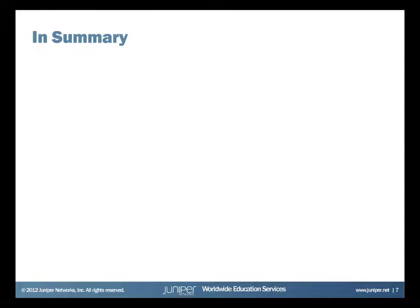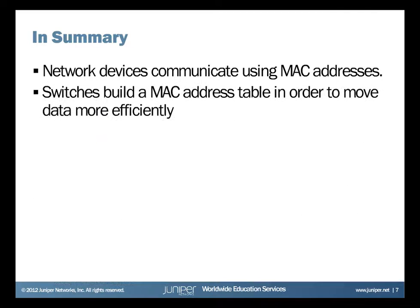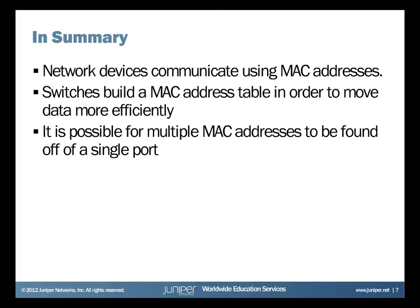So this brings us to the end of this Learning Byte. But before we go, let's have a quick recap of what we've discussed. We talked about when network devices communicate with each other, they use the MAC address to determine where the frame should go. Switches build a MAC address table in their memory so that they know exactly through which port they should send the frame. And finally, as we saw in the demonstration, it is possible to have multiple MAC addresses coming off of a single port in the case of a trunk link.